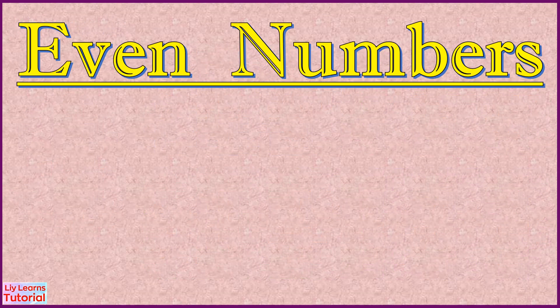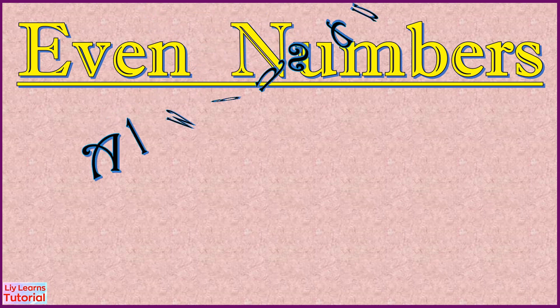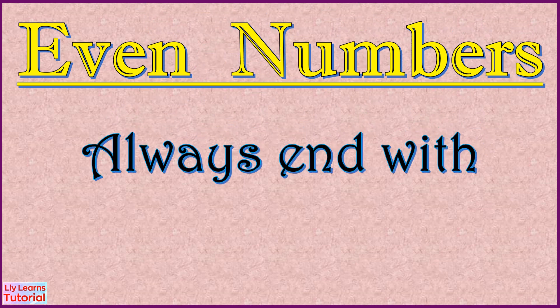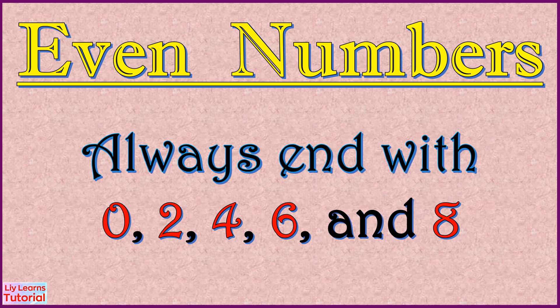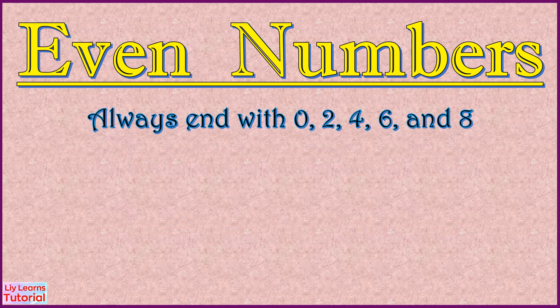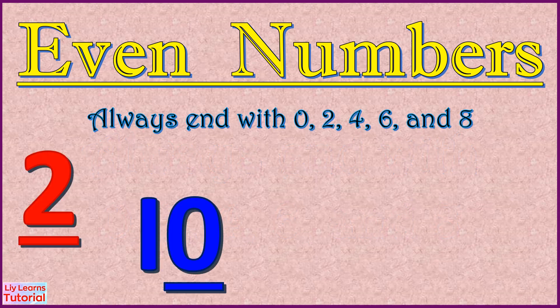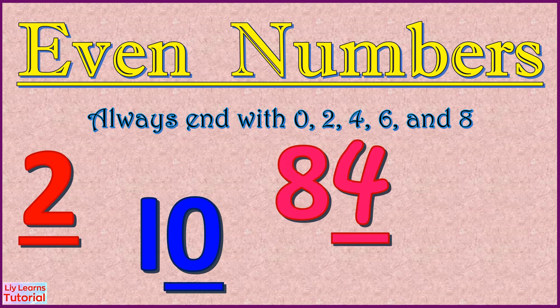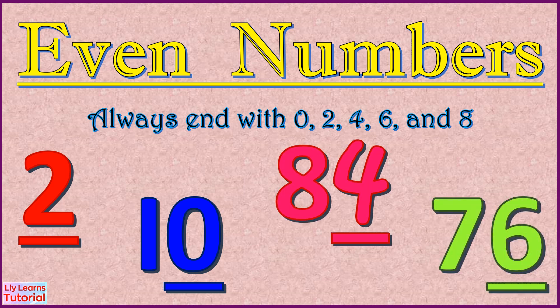Even numbers always end with zero, two, four, six, and eight. Like two, ten, eighty-four, and seventy-six.